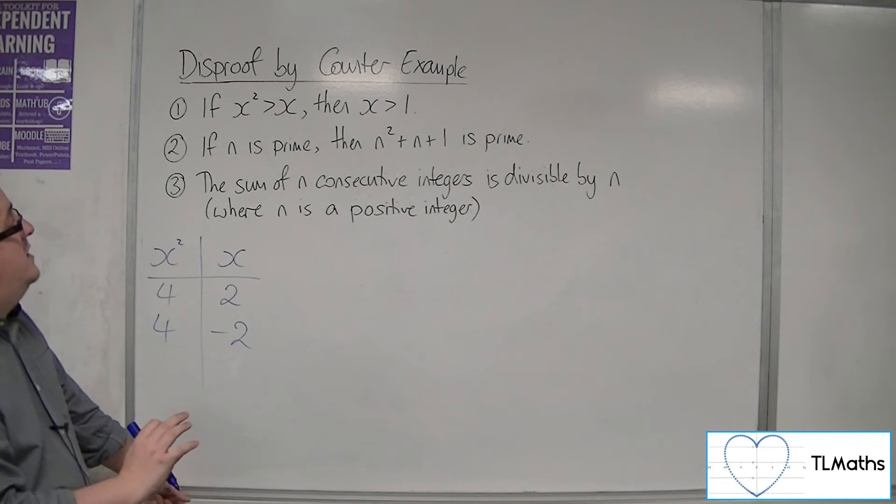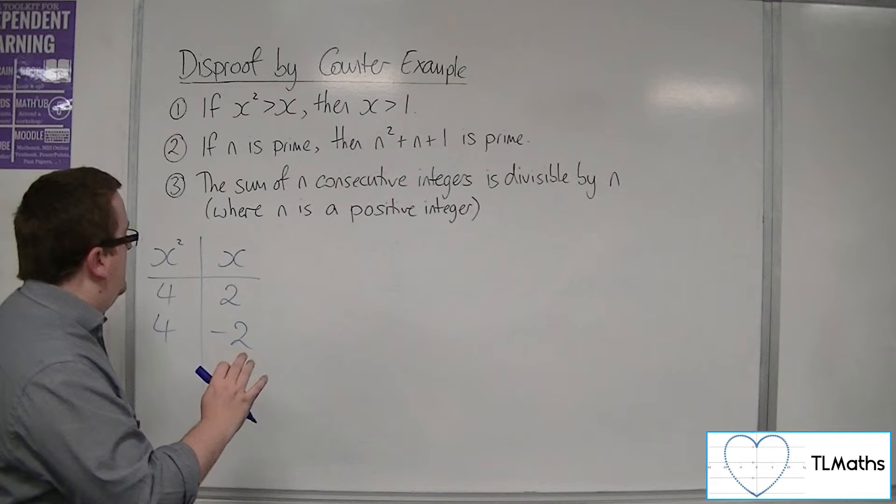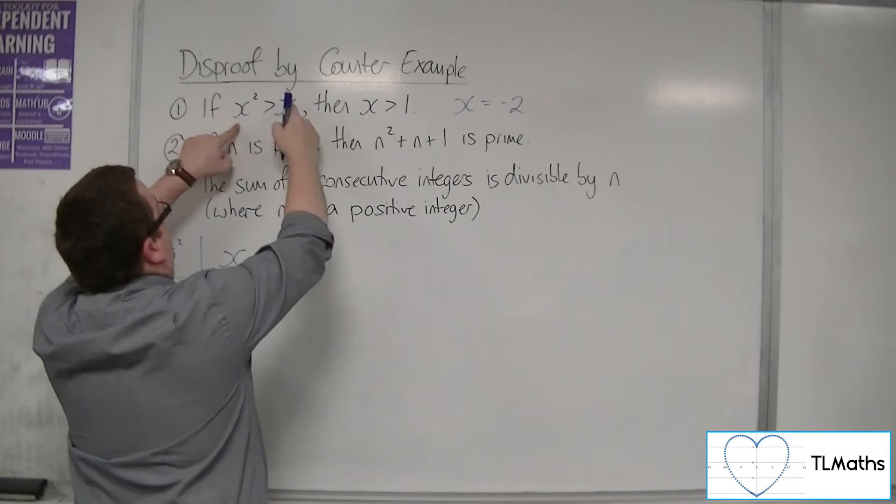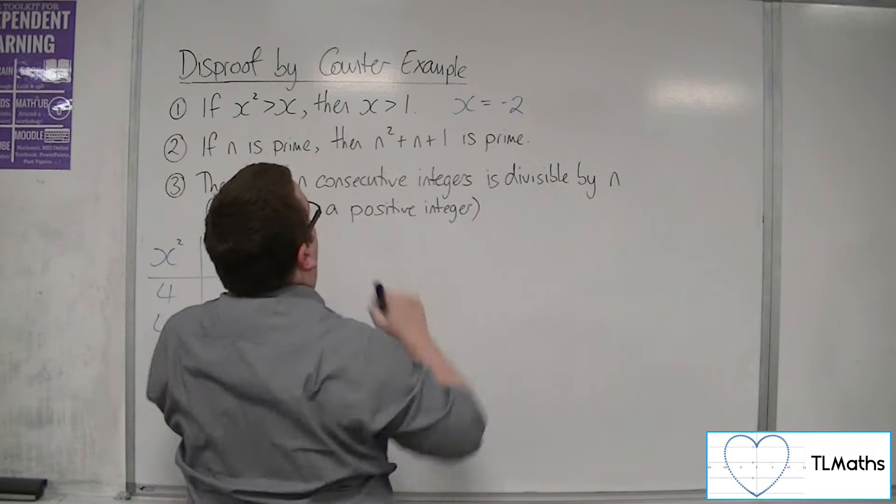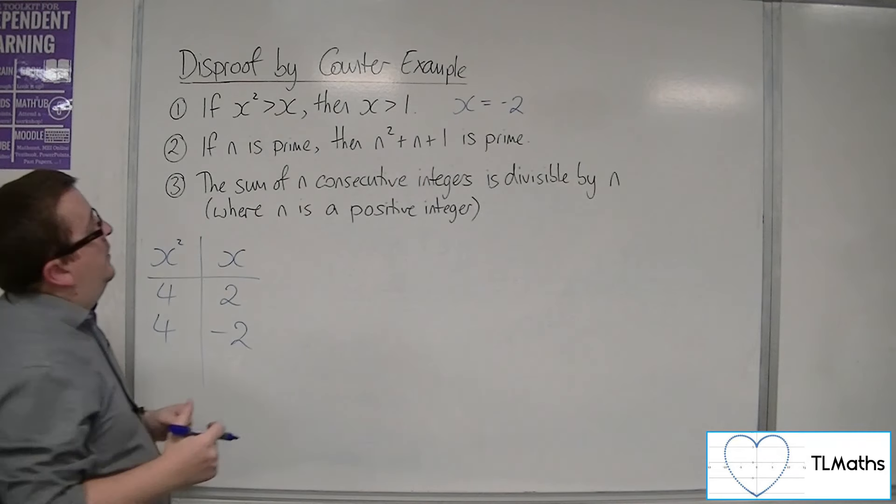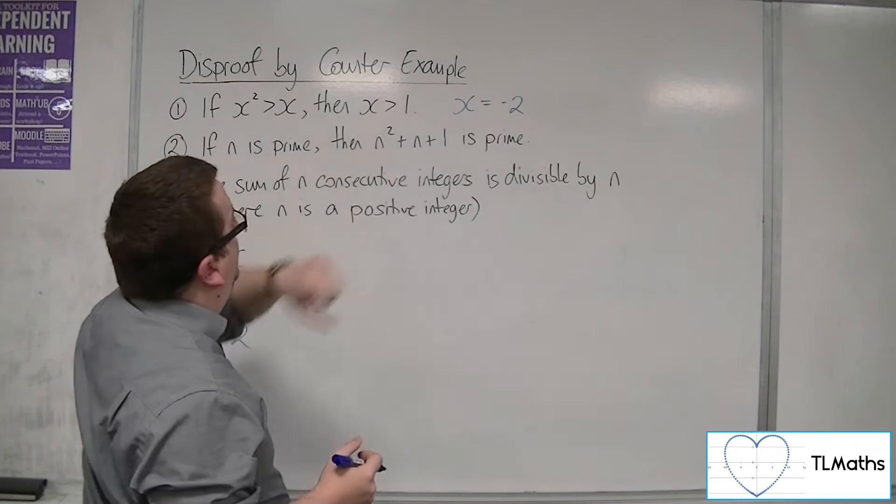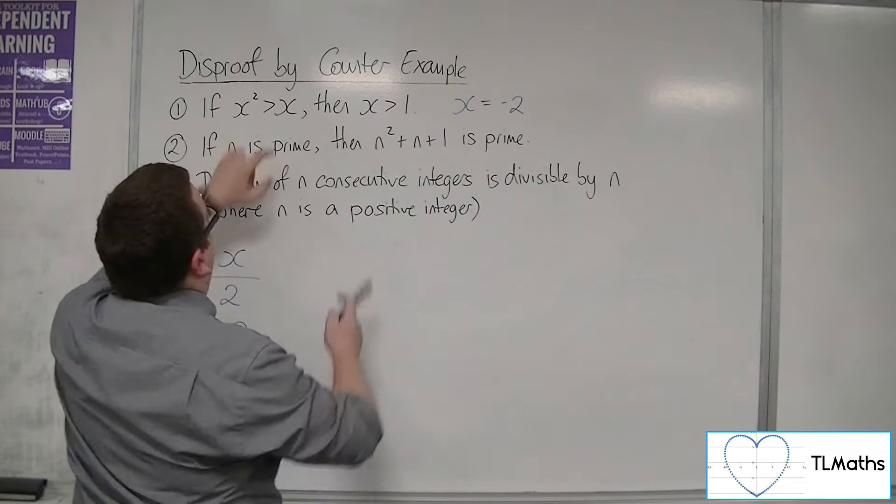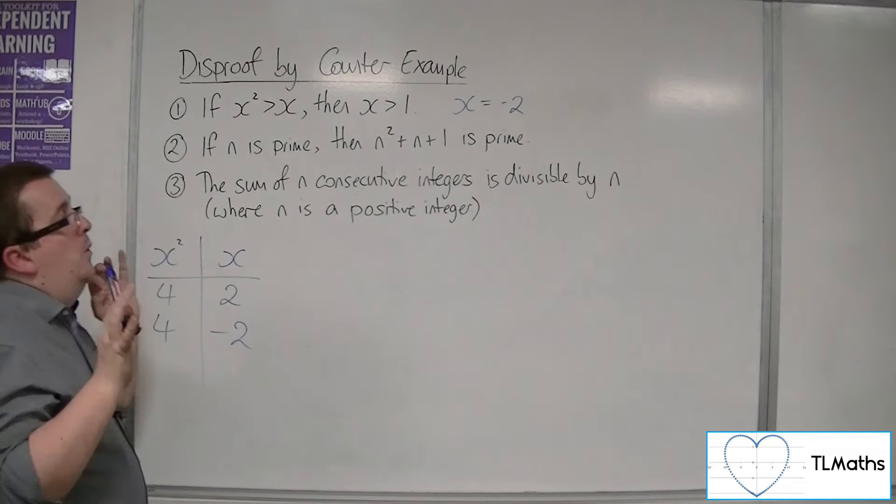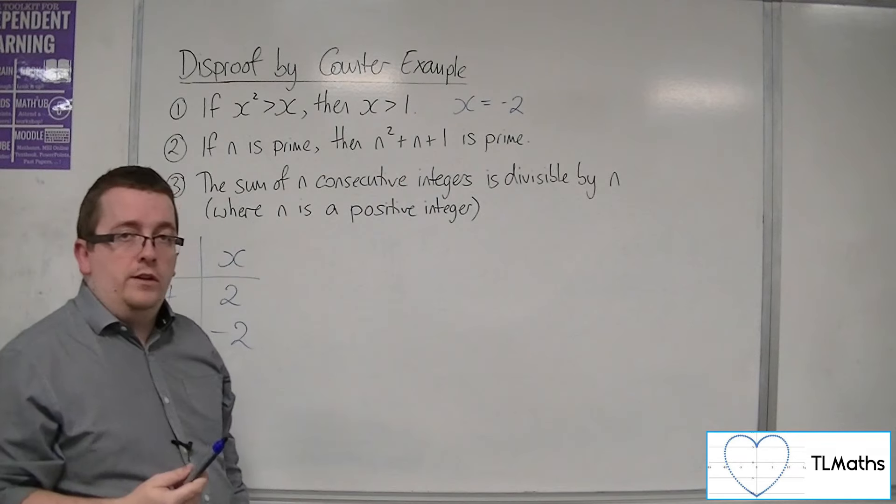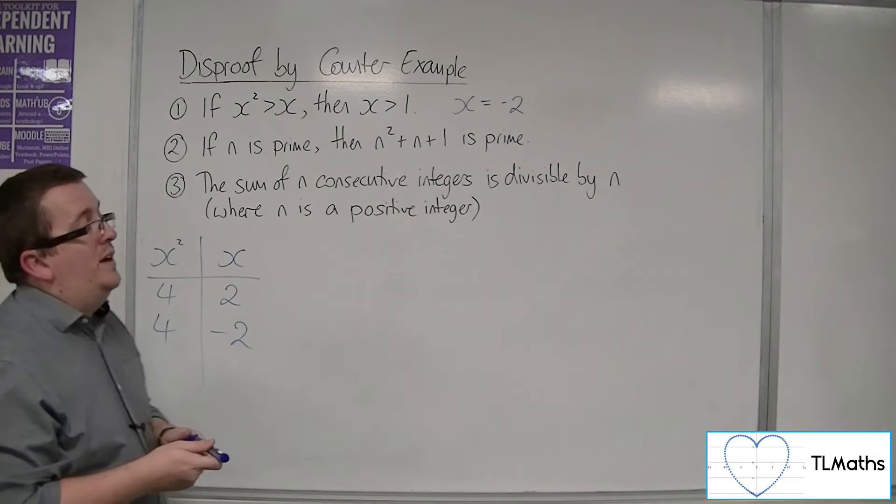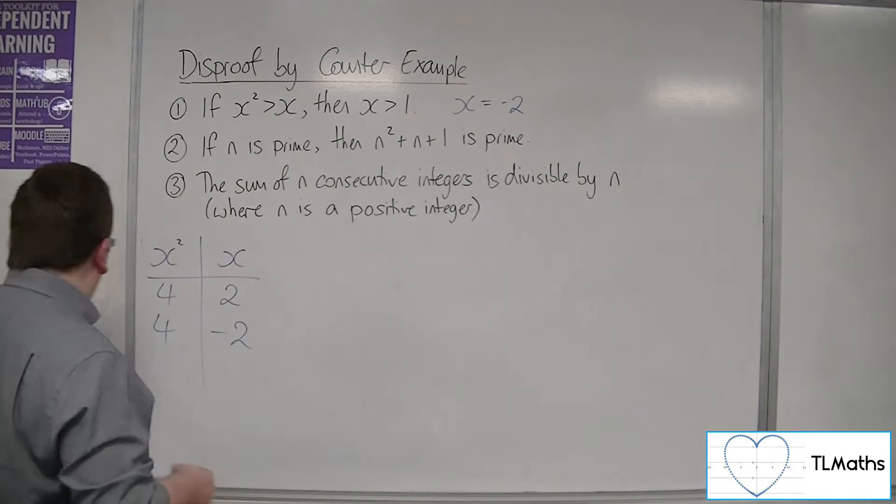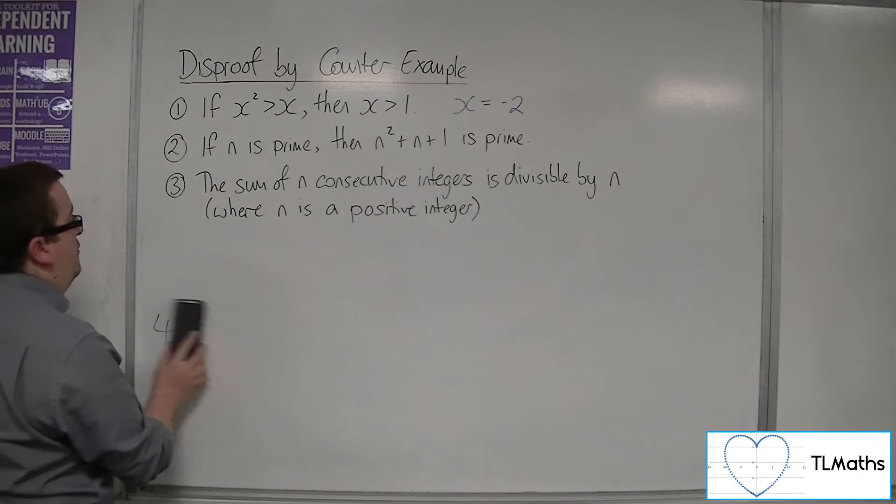So we've found an example. We've found a single example where x equals minus 2, where this statement is true, but that statement is false. So it's like a logical consequence that they're trying to formulate here. They're trying to show that if that's true, then that's true. But we can show one example where clearly it doesn't work. So because there's that one example, this logical consequence isn't true. It doesn't work. So that is a disproof by counterexample.